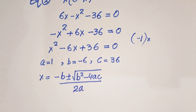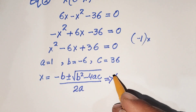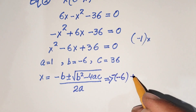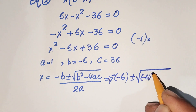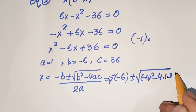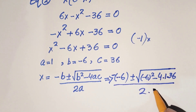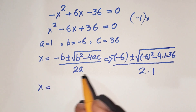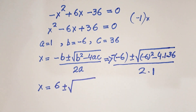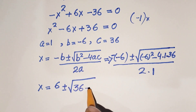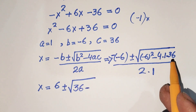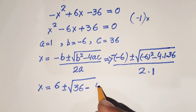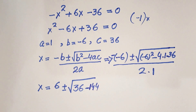Substituting the values: minus b is minus times minus 6, plus or minus square root of minus 6 squared minus 4 times 1 times 36, all over 2 times 1. This simplifies to 6 plus or minus square root of 36 minus 144, all over 2.